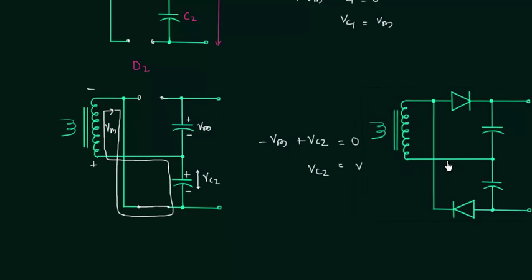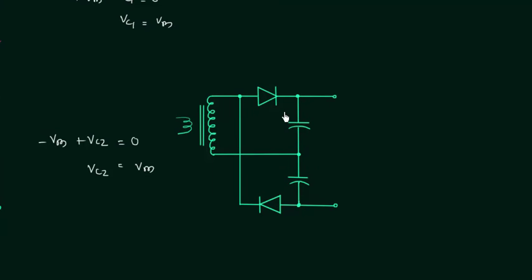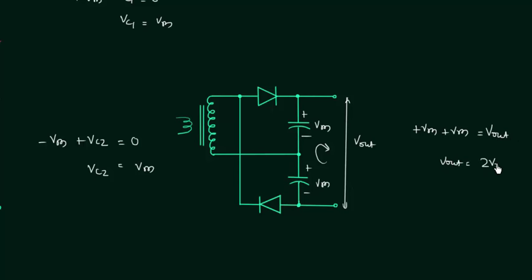In the final circuit both capacitors are now charged, each having a voltage of Vm. Using Kirchhoff's voltage law moving in the clockwise direction: plus Vm from the first capacitor plus Vm equals Vout. So Vout is simply equal to twice Vm. This circuit is therefore working as a voltage doubler.